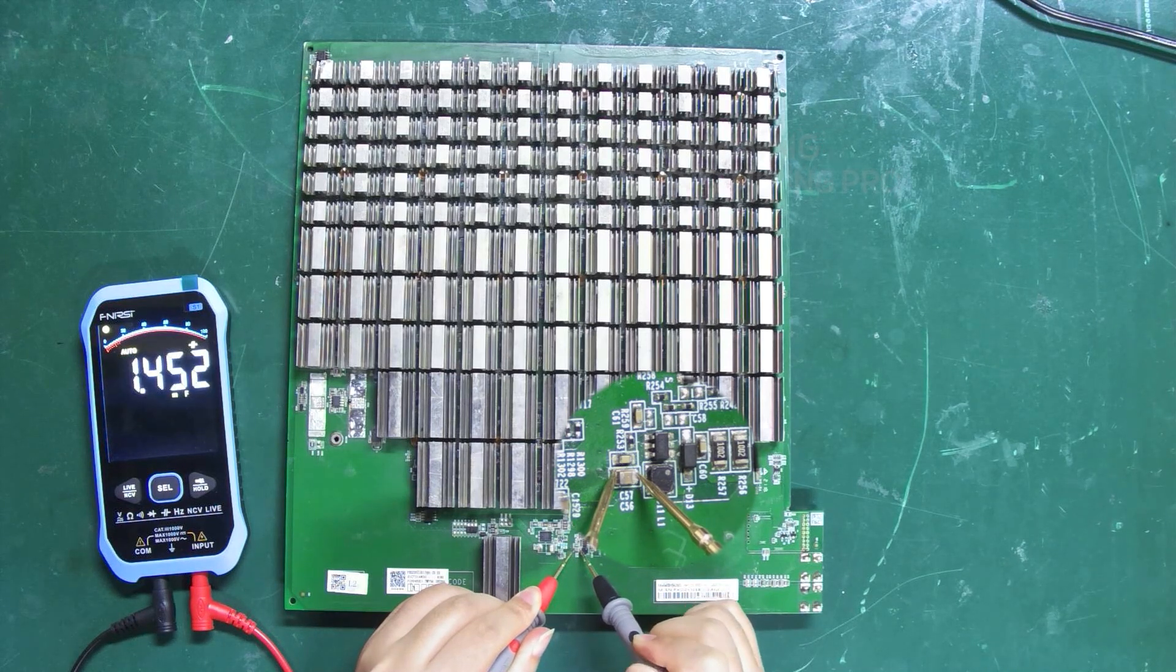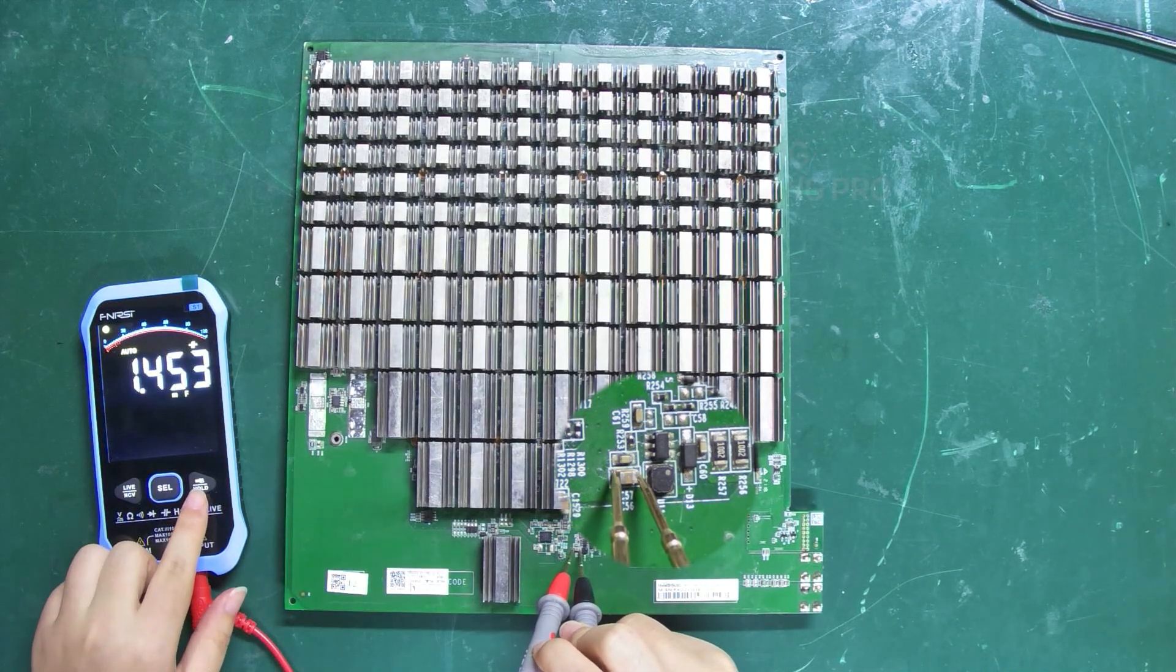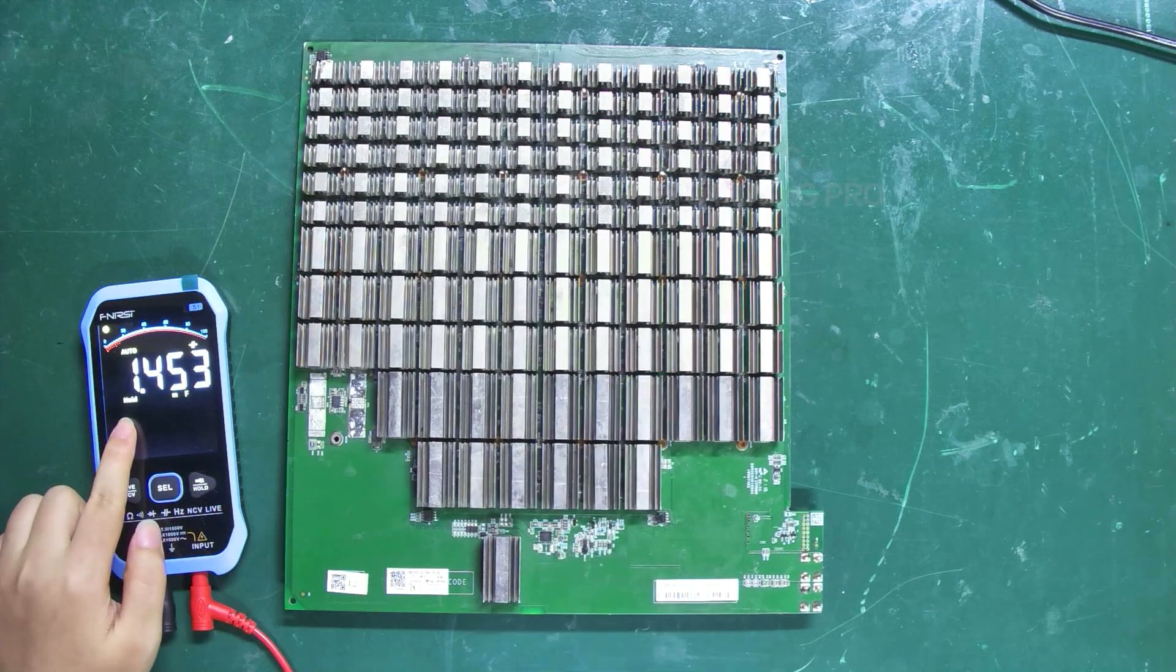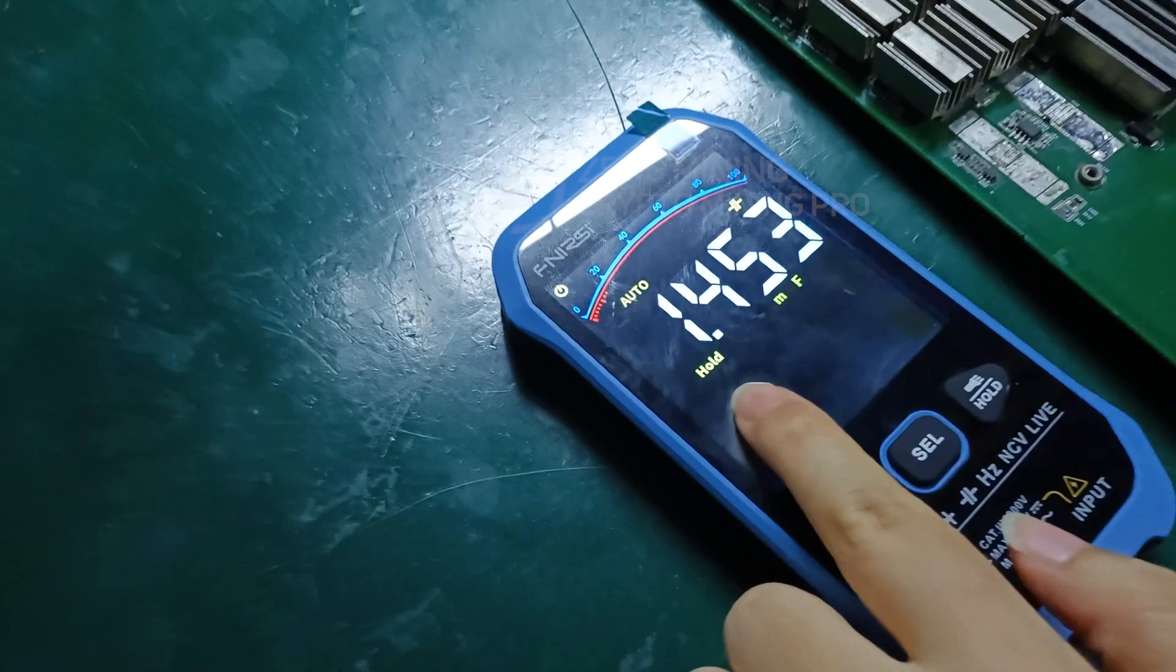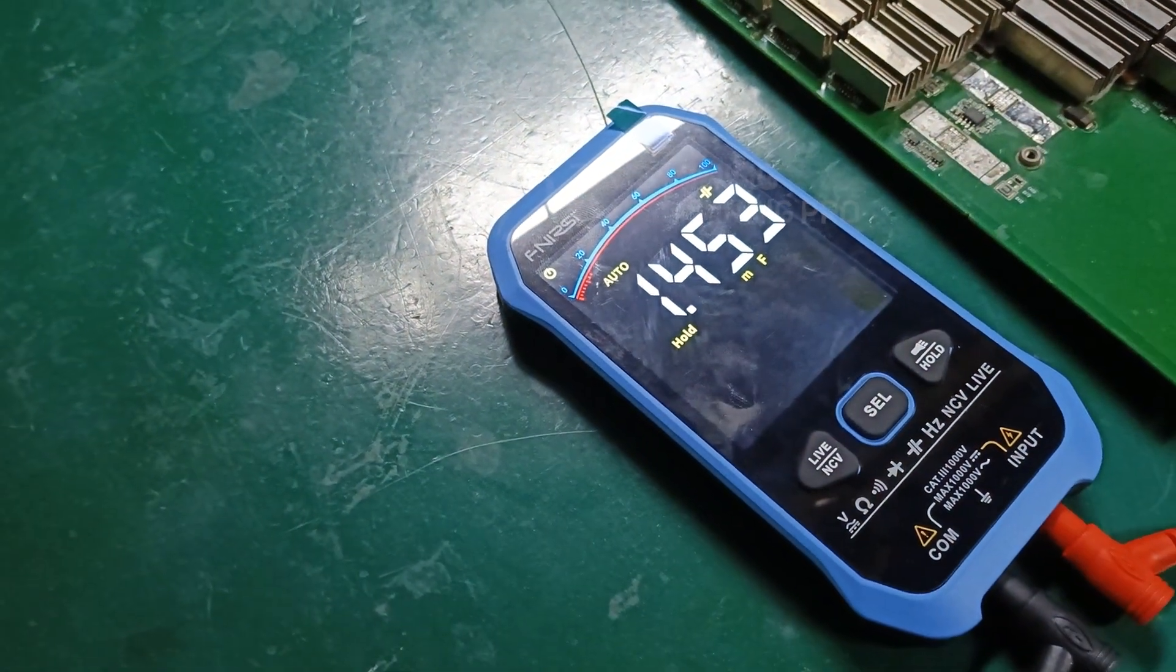When the measurement result shows up, press the HOLD key and remove the test leads. The measurement data will still be displayed on the multimeter screen, which is convenient for us to observe the result.